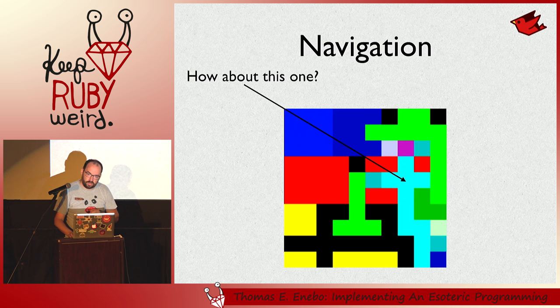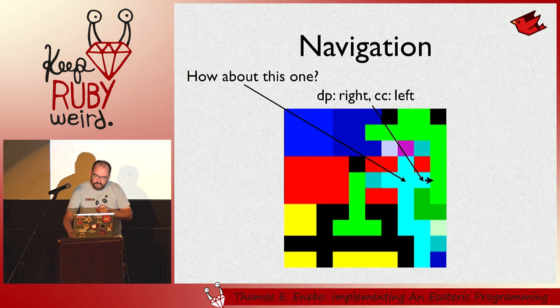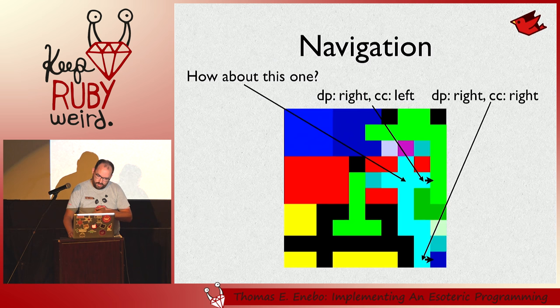Let's go for a slightly more tricky example. In this group, if the direction pointer is right and the codel chooser is left, we go all the way to the right and we pick the top one, and we'd go across there. And obviously if it's right, we'd go there. Simple language, right?